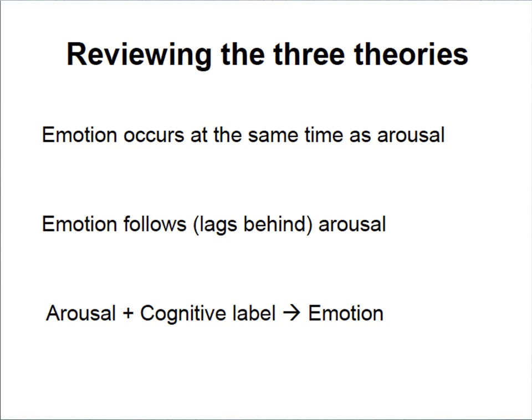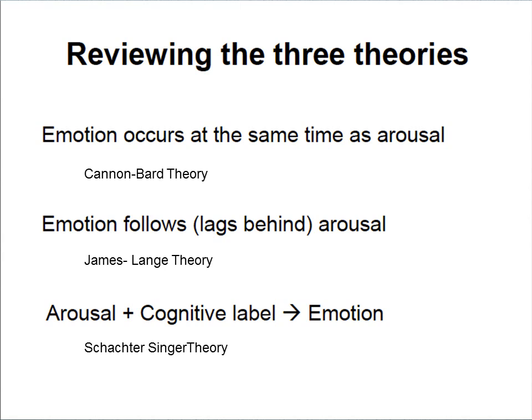Reviewing the three theories: emotions occur at the same time — that's Cannon-Bard. The emotion follows a lag after the arousal (physical arousal first, then emotion) — that's James-Lange. You have an arousal and a cognitive label at the same time, then the emotion — that's the Schachter-Singer Two-Factor Theory.